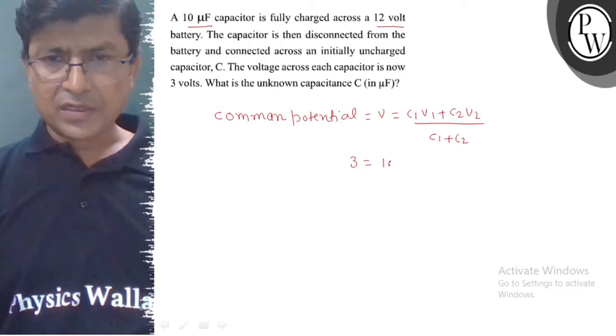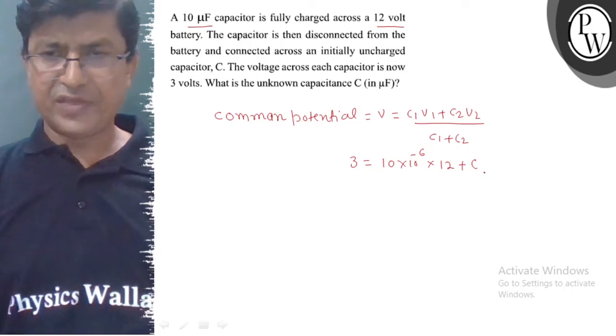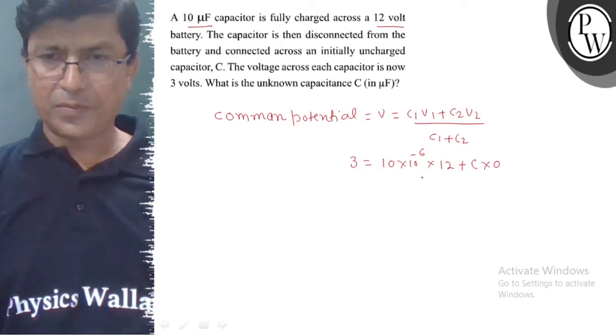C1 is 10µF. V1 value is 12V. C2 we don't know. We have assumed V2, and V2 value is 0.